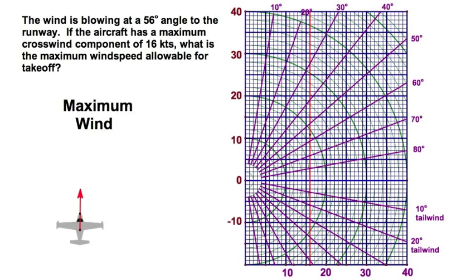Let's use the chart in a slightly different way. In this example, I have an aircraft that has a maximum allowable crosswind component for takeoff and landing of 16 knots. So, I'm going to look at the 16 here. I've got highlighted in red. Remember, that's down here on this scale. That's on the crosswind component scale, and if the wind is coming at me at 56 degrees, well, what's the maximum velocity of the wind? All I have to do is read this arc, and I can see right here, roughly 19.3.